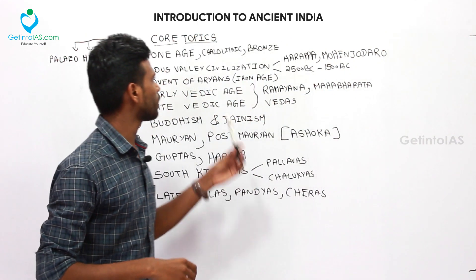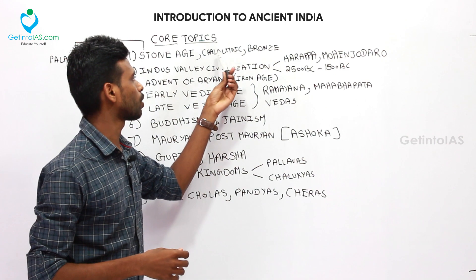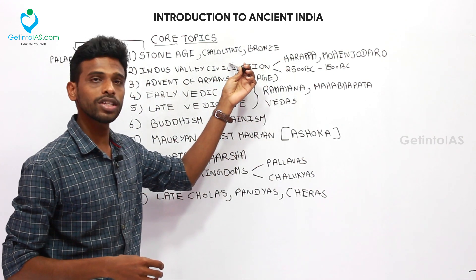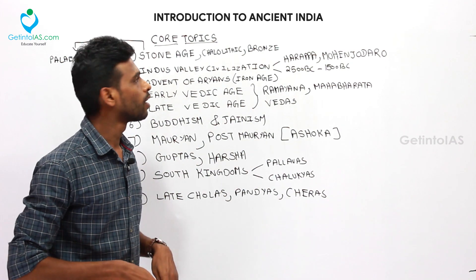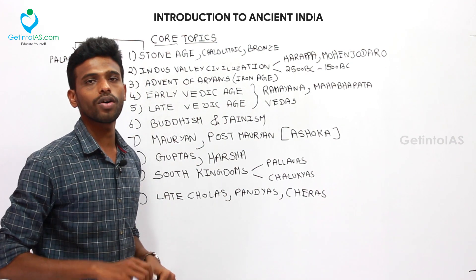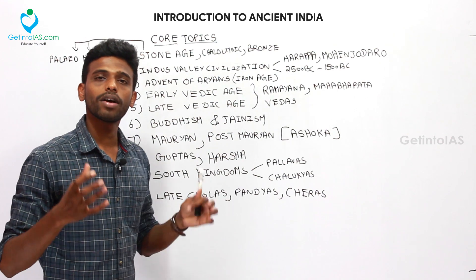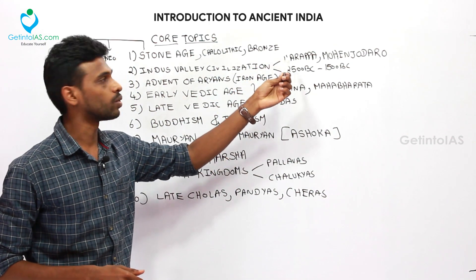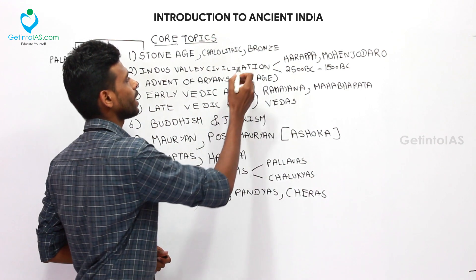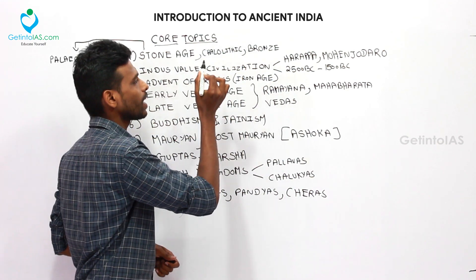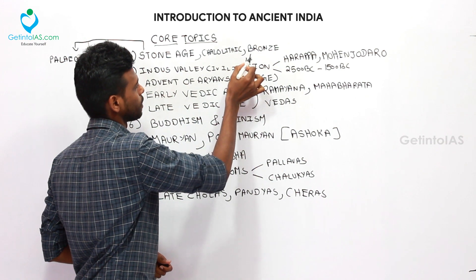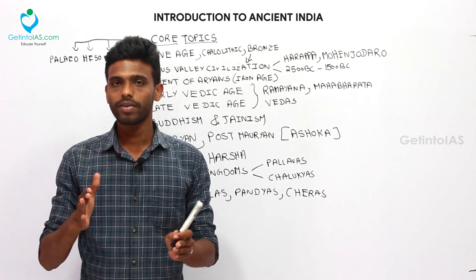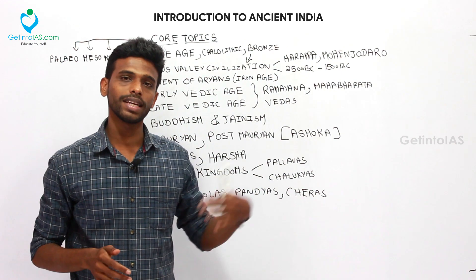Then moving on to Chalcolithic Age. There was not much history during Chalcolithic Age because it soon transformed into Bronze Age. Chalcolithic Age is a period where man learned the art of using copper, and then he mixed copper with tin and learned the use of bronze. So then Bronze Age civilization emerged. There were other civilizations in the world which will be introduced in the next videos.